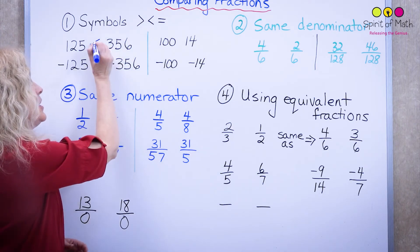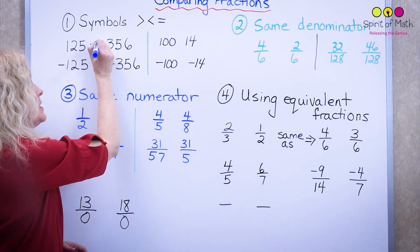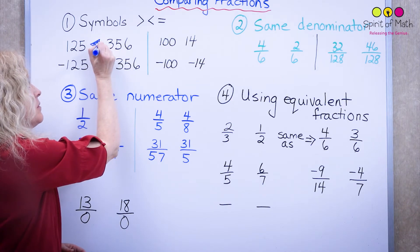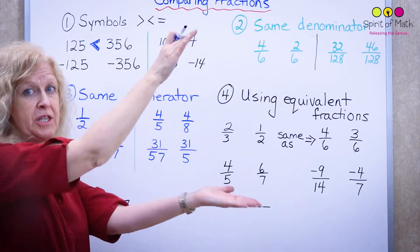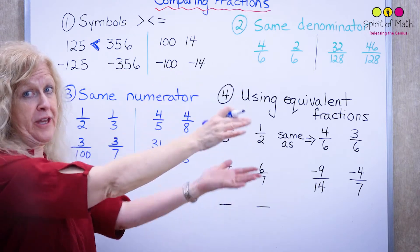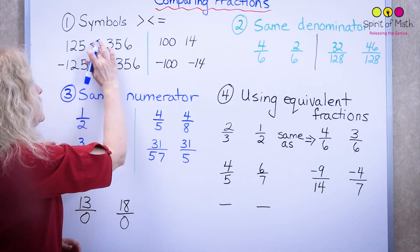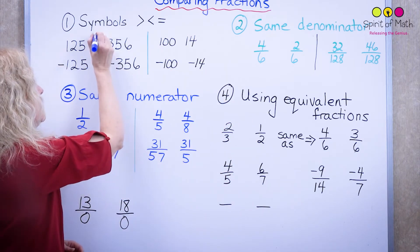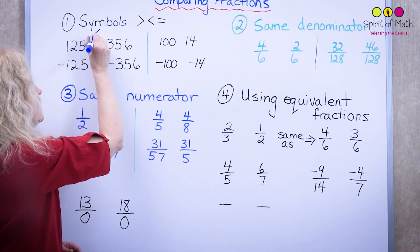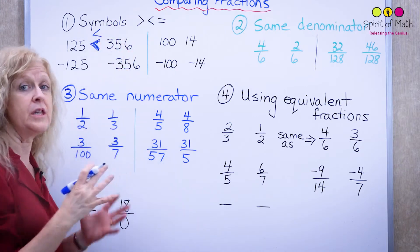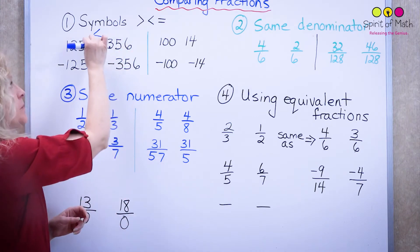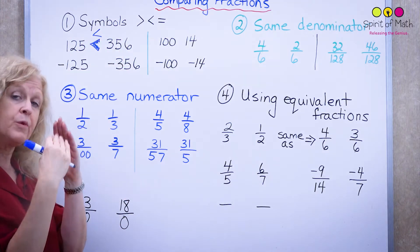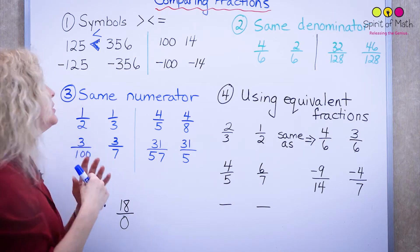Sometimes people like to think of a crocodile — these are teeth — and they like to eat the bigger things. So the open part of the symbol goes to the larger number, and the pointy part, the smaller part, points to the smaller number.